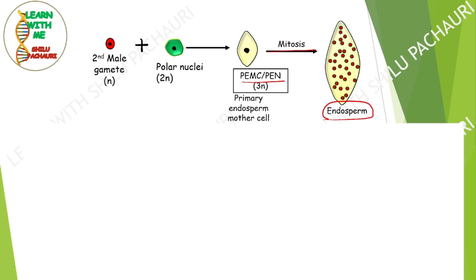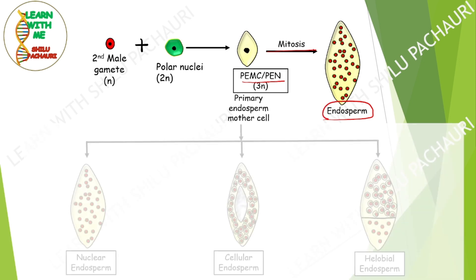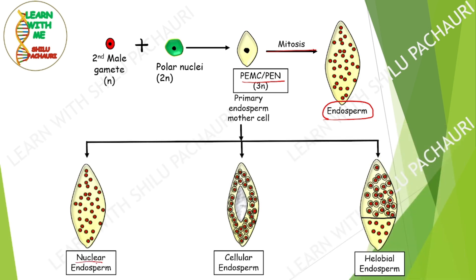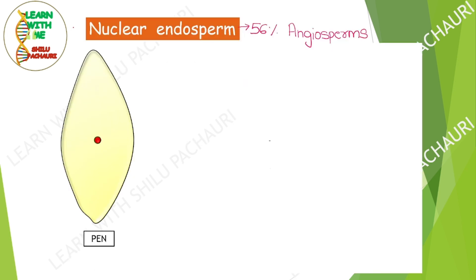PEMC or PEN divides mitotically and that is how endosperm formation takes place. On the basis of development, endosperm is classified into three main groups: nuclear endosperm, cellular endosperm, and halobial endosperm. Now let's discuss each one in detail. The first type is nuclear endosperm, which is very common and is found in around 56% of the angiosperms.